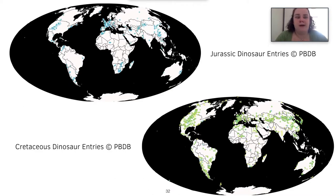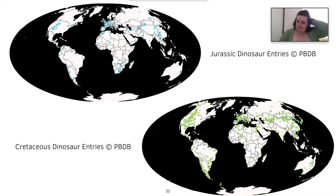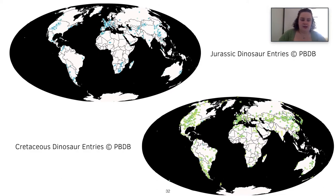Another key bias concerns data and who contributes it. Here we have a useful example of Jurassic and Cretaceous dinosaur entries for the Paleobiology Database. There are quite a lot of biases in this, because there are discrepancies in who uses the database. Notably, not as many dinosaurs are recorded from Asia and Africa compared to other regions, showing the ongoing biases within dinosaur paleobiology.